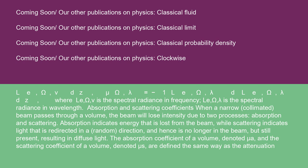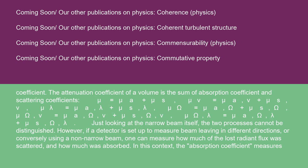Absorption and scattering coefficients: when a narrow, collimated beam passes through a volume, the beam will lose intensity due to two processes — absorption and scattering. Absorption indicates energy that is lost from the beam, while scattering indicates light that is redirected in a random direction and hence is no longer in the beam but still present, resulting in diffuse light. The absorption coefficient of a volume, denoted μ_a, and the scattering coefficient, denoted μ_s, are defined the same way as the attenuation coefficient. The attenuation coefficient is the sum: μ = μ_a + μ_s; μ_ν = μ_{a,ν} + μ_{s,ν}; μ_λ = μ_{a,λ} + μ_{s,λ}.